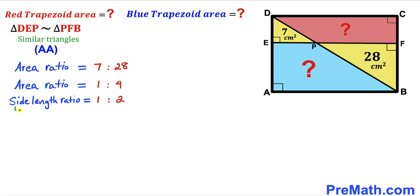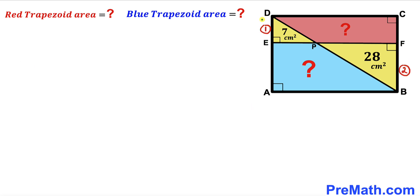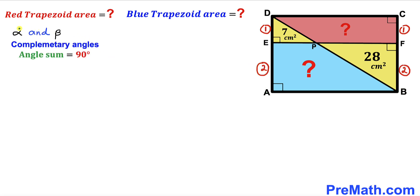Therefore, the side length ratio is 1 to 2. The side length of triangle DEP is 1 unit (one circle) and the side length of triangle PFB is 2 units (two circles). Observing the figure, if this side length is 1 circle, then side CF is also 1 circle. And if this side length is 2 circles, then side E is also 2 circles.